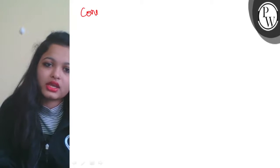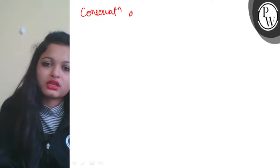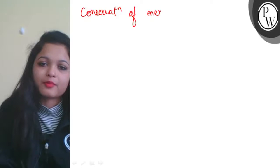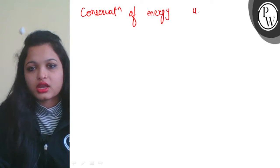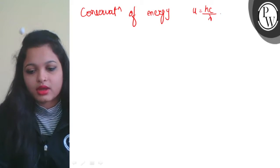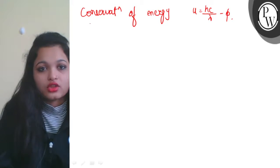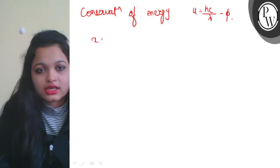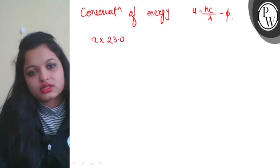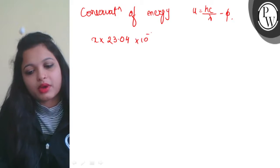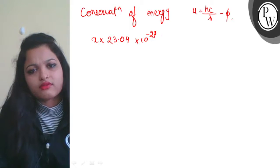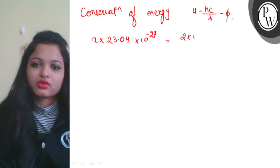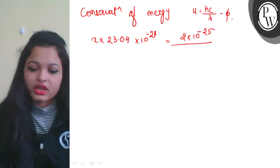Now what we need to do is use conservation of energy. Conservation of energy: U = hc/λ minus φ (work function). So 23.04 × 10^-27 = hc/λ, where hc = 2 × 10^-25 divided by lambda.